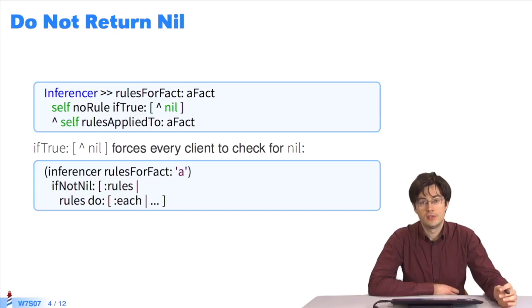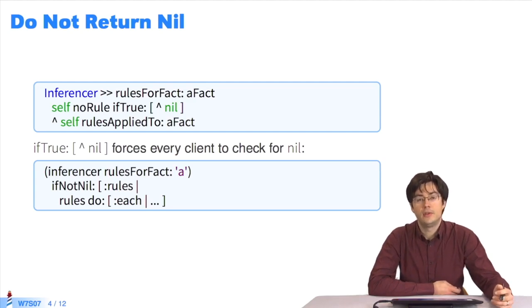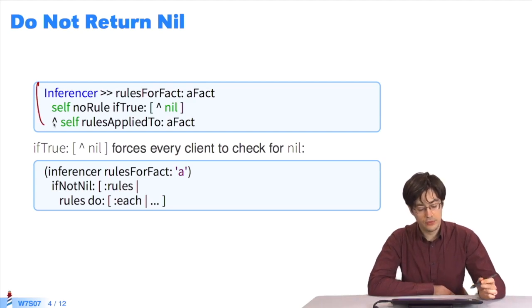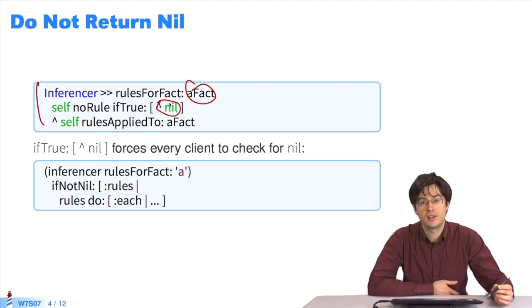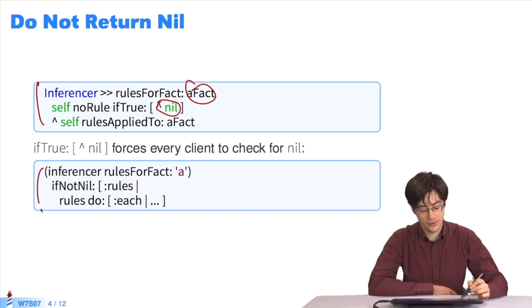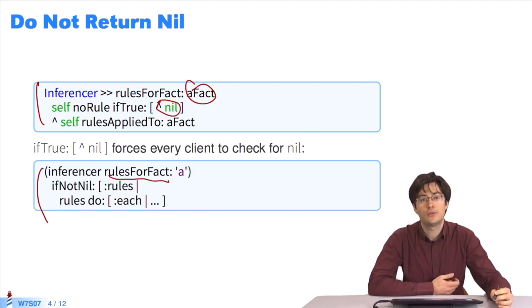Now we'll discuss the specific case of nil. If a method returns nil, you'll oblige your clients to use if statements, whereas using if is rarely recommended. Here we use an example of a code based on a parameter and an inferencer. We see that in some cases nil is returned. This means that when we use this code, we need to test whether rulesForFact returned nil, and we act differently depending on the reply.